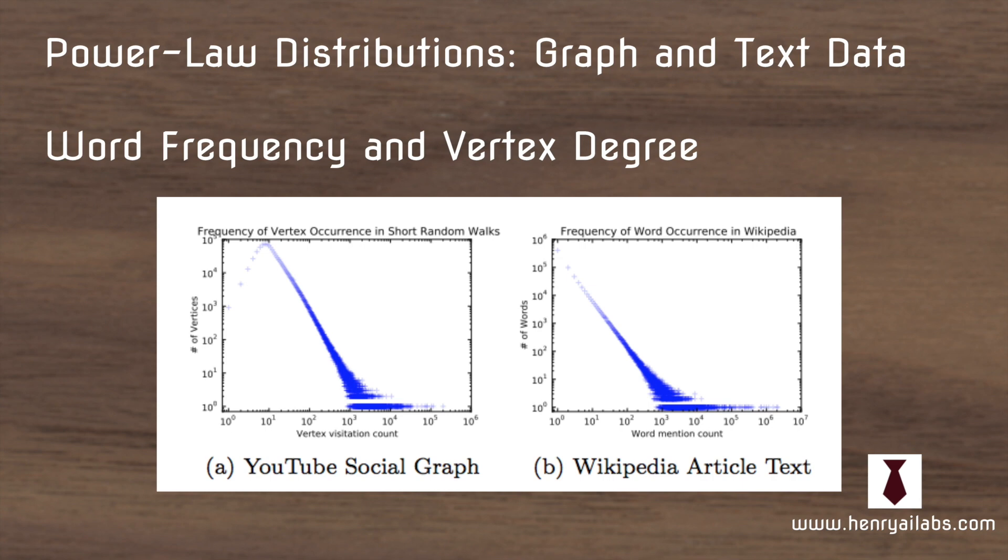So another interesting thing is that graph and text data both follow this power law distribution of frequency and degree. So like in text, words like the, as, in, they appear really frequently. And in social networks, some users have much more connections than others.